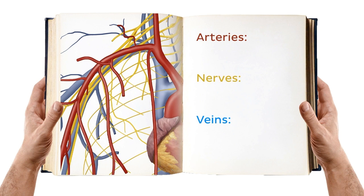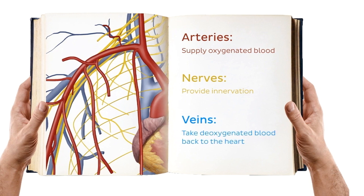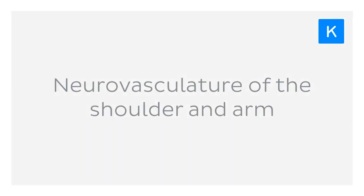These structures are found throughout the body and they supply it with oxygenated blood, innervation, and take deoxygenated blood back to the heart. Collectively, they're known as the neurovasculature, and in today's tutorial we will focus on the neurovasculature of the shoulder and the arm.